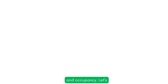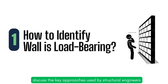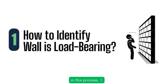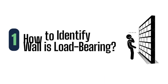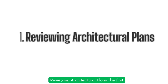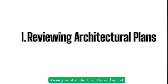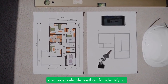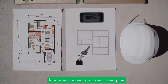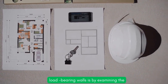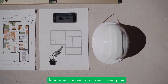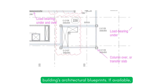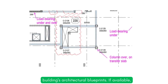Let's discuss the key approaches used by structural engineers in this process. The first and most reliable method for identifying load-bearing walls is by examining the building's architectural blueprints. If available,